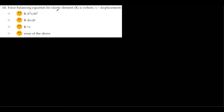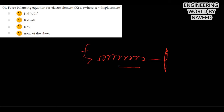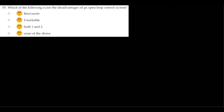The next MCQ is: the force balancing equation for an elastic element k where x is displacement — is it k d²x/dt², k dx/dt, kx, or none of these? Consider the elastic element, or spring. If you apply force f on the spring, it applies an opposing force f_k proportional to displacement x. So f_k = kx, where k is the constant of proportionality. Option c, kx, is the correct answer.